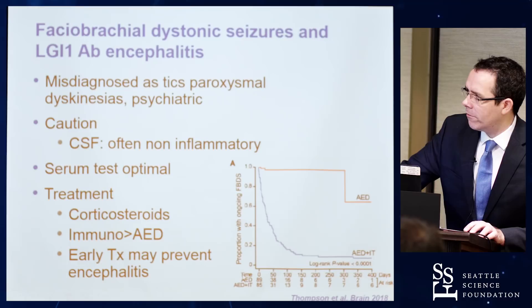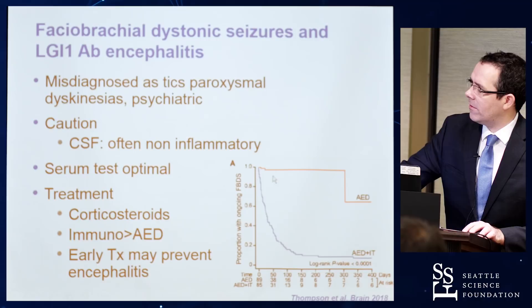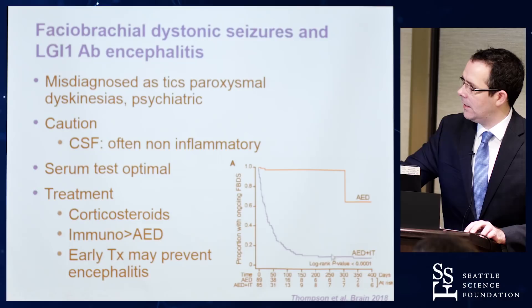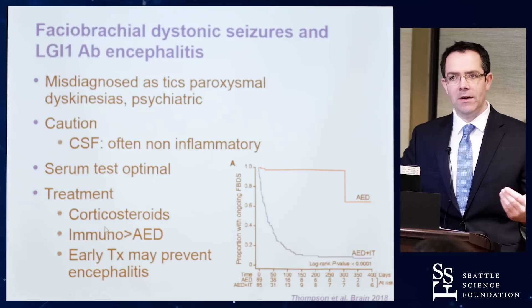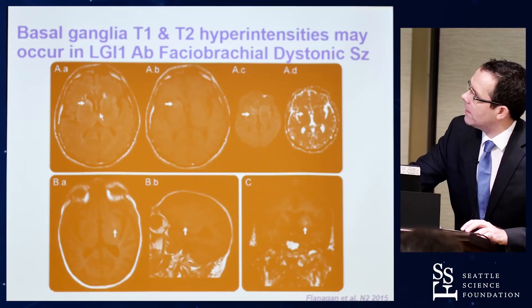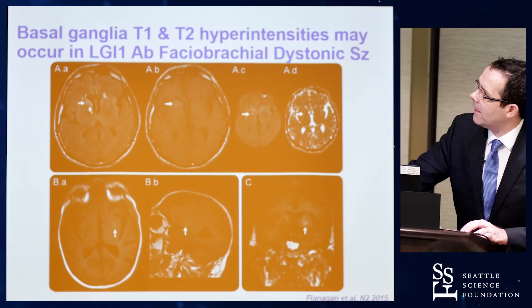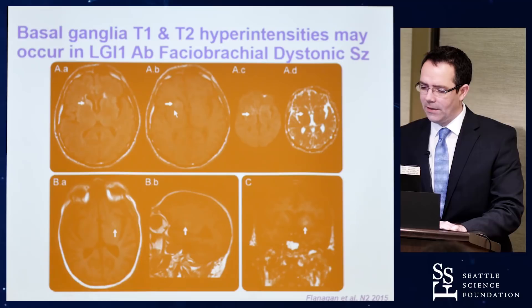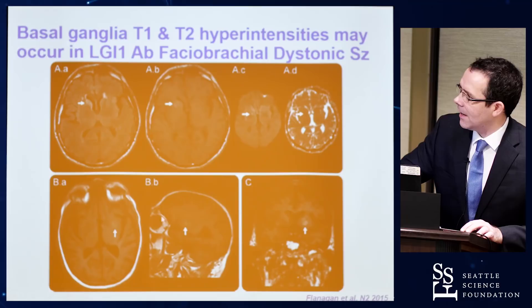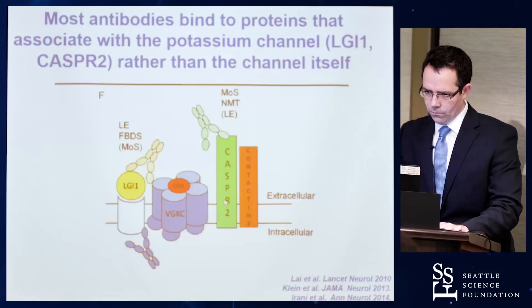The treatment is corticosteroids. An article from the Oxford group by Dr. Arani and colleagues, who first described this disorder, shows that patients with faciobrachial dystonic seizures have little response to anti-epileptic medications but a dramatic reduction in seizures once immunotherapy is added. IV or oral corticosteroids are the mainstay of treatment. In a small proportion of patients, signal abnormalities within the basal ganglia — either T2 or T1 hyperintensities — are seen, often contralateral to where these episodes occurred, suggesting these may arise from deep structures rather than the cortex.